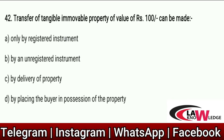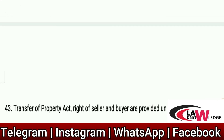Q42: Transfer of tangible immovable property of value Rs. 100 can be made — Option A: Only by registered instrument. Option B: By an unregistered instrument. Option C: By delivery of property. Option D: By placing the buyer in possession of the property. Correct answer is A. If someone wants to transfer tangible immovable property worth Rs. 100, it can only be done by a registered instrument.